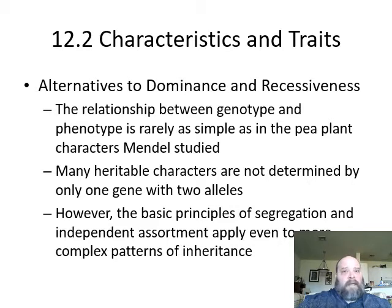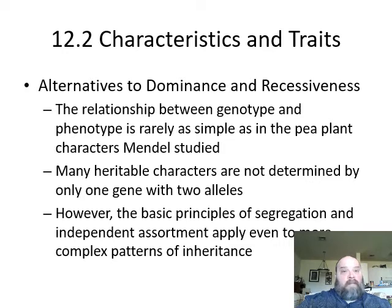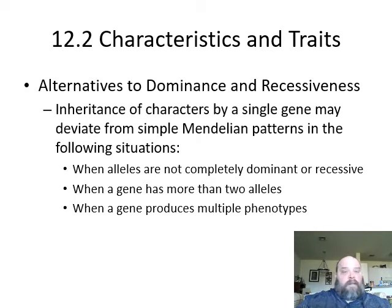There was somebody up on high looking down on him favorably because the pea plants he chose — the traits he chose to count and to study — come to find out, they're all on different chromosomes, and there are only two alleles, two flavors for every one of those genes. It turns out, though, most things don't quite follow Mendelian genetics. There are going to be alternatives, exceptions to the rules.